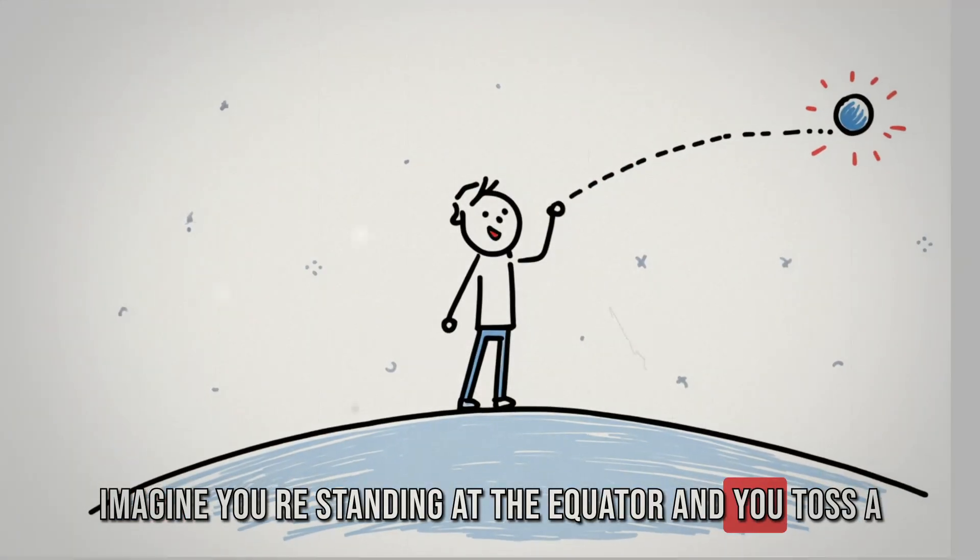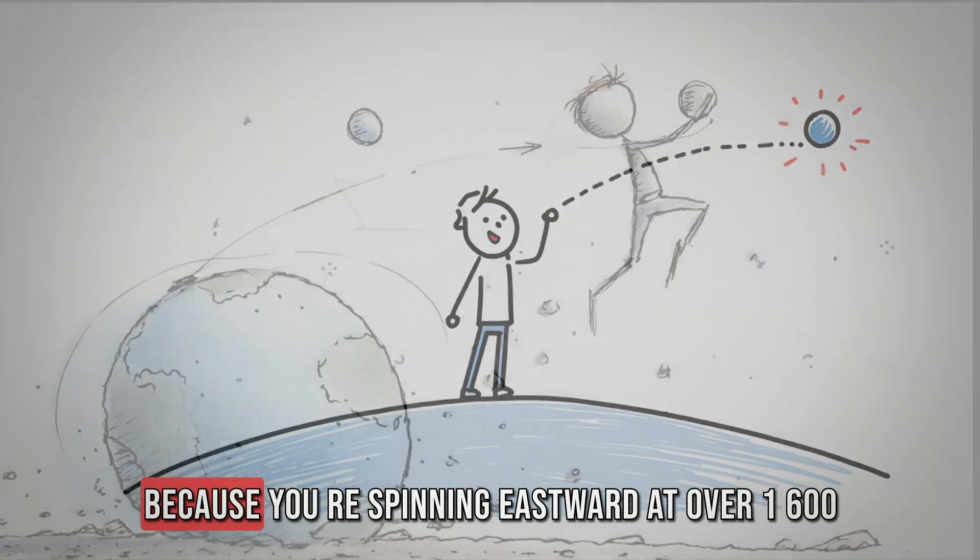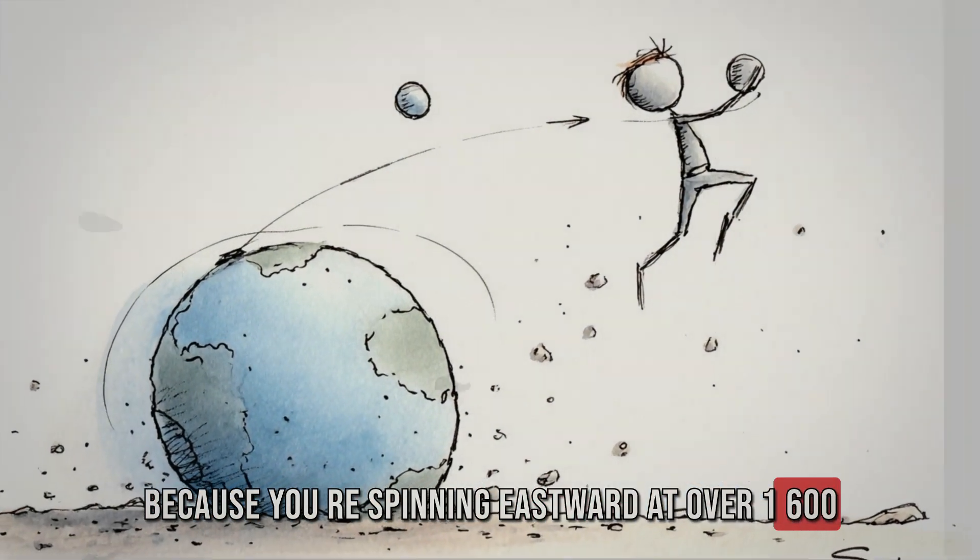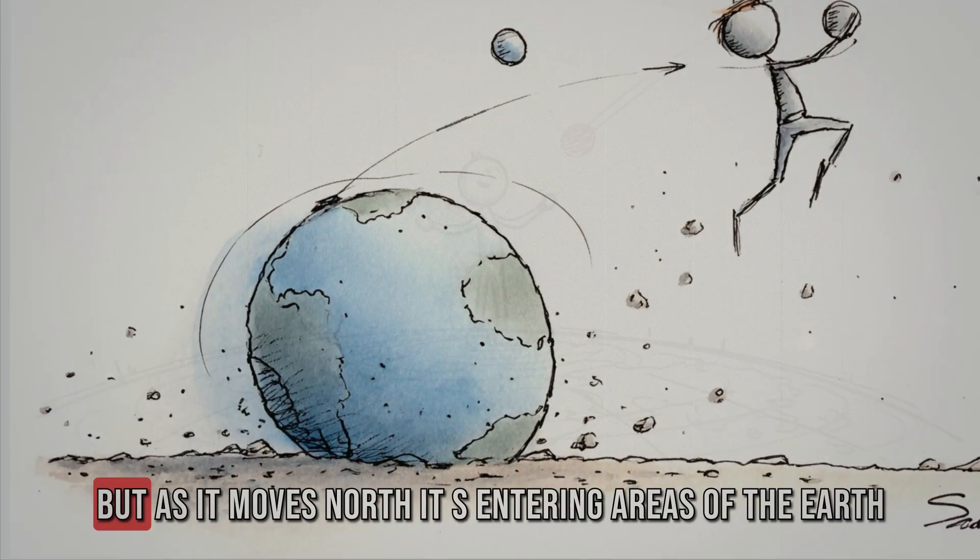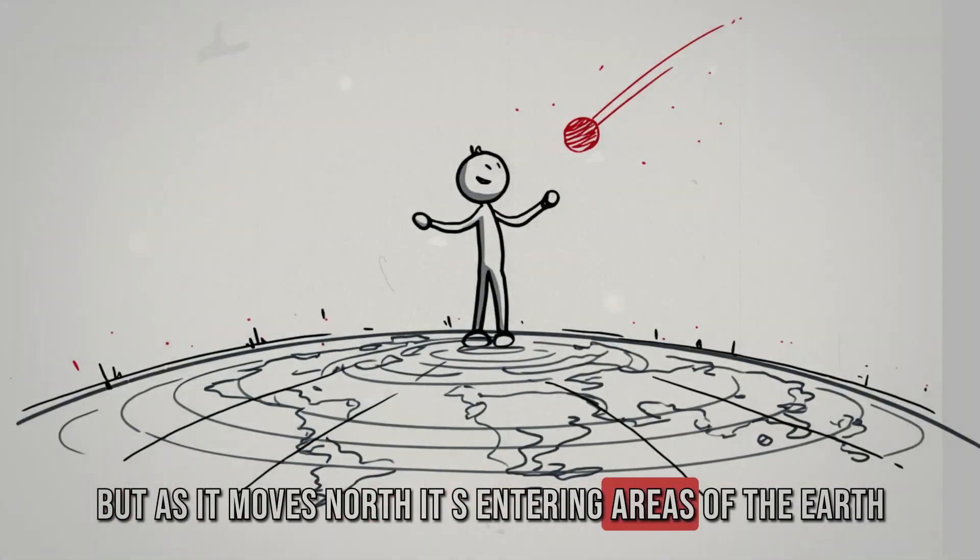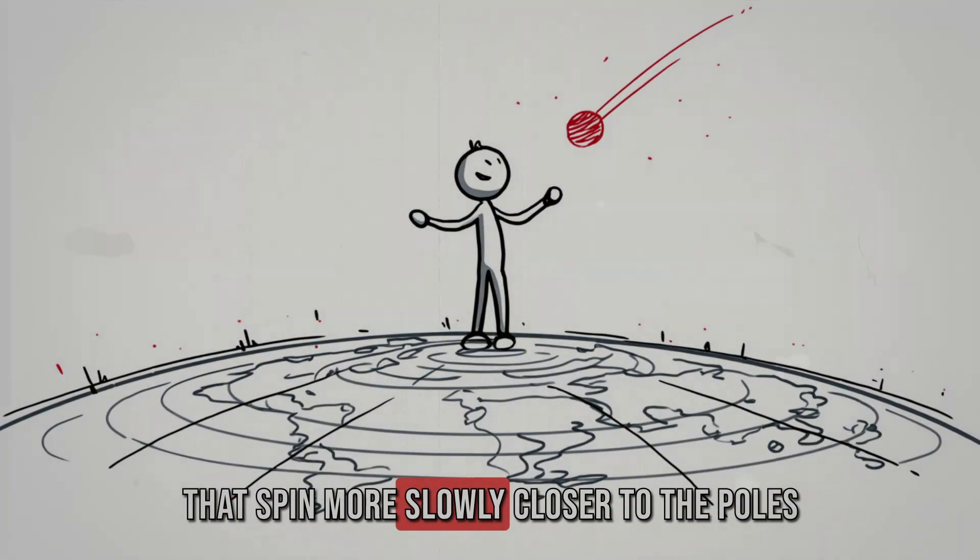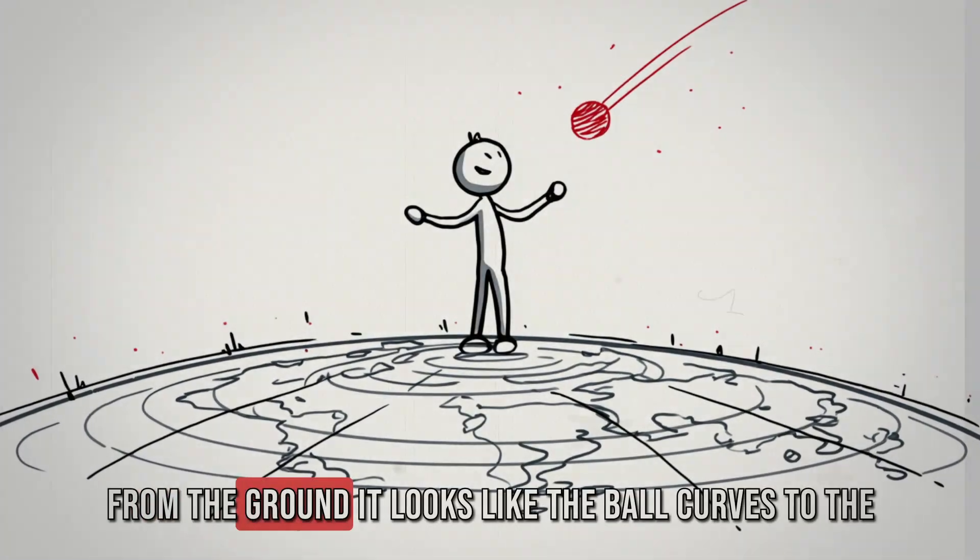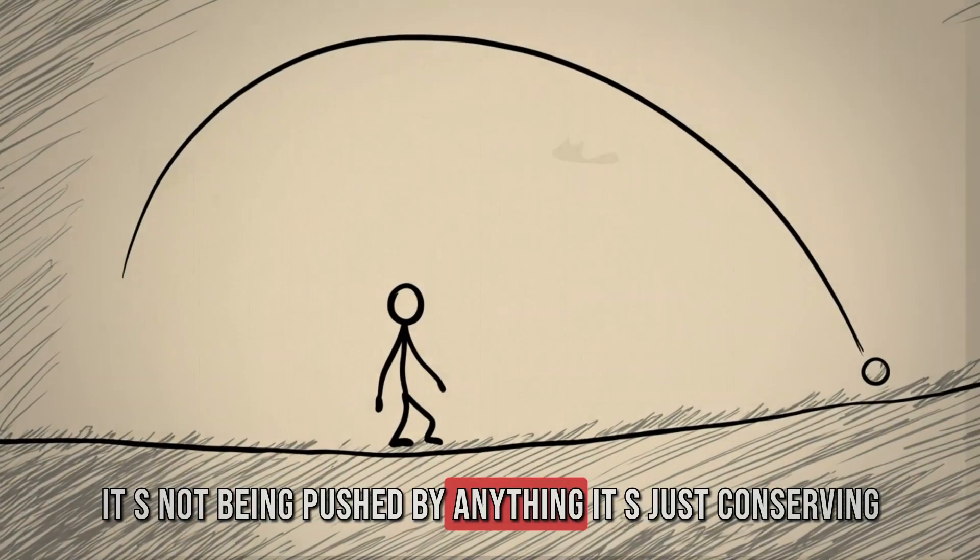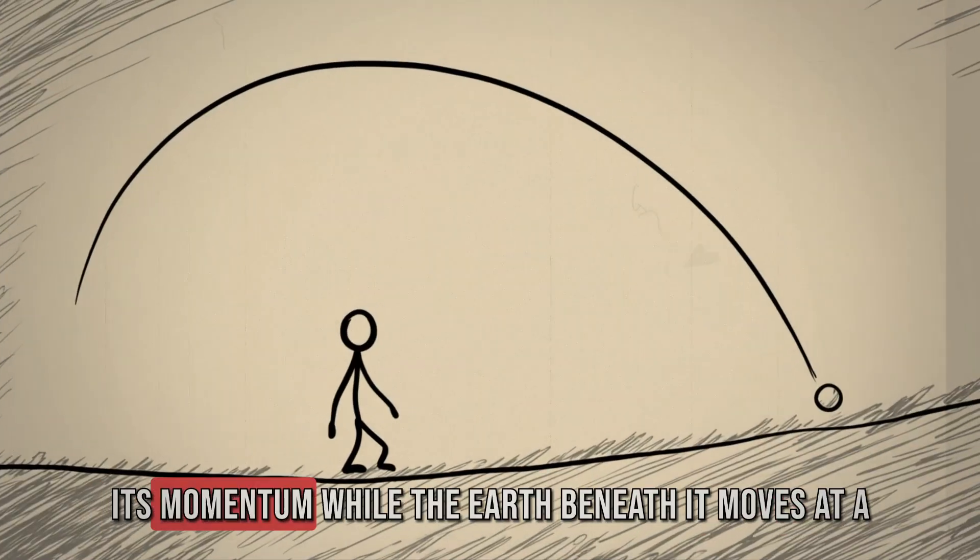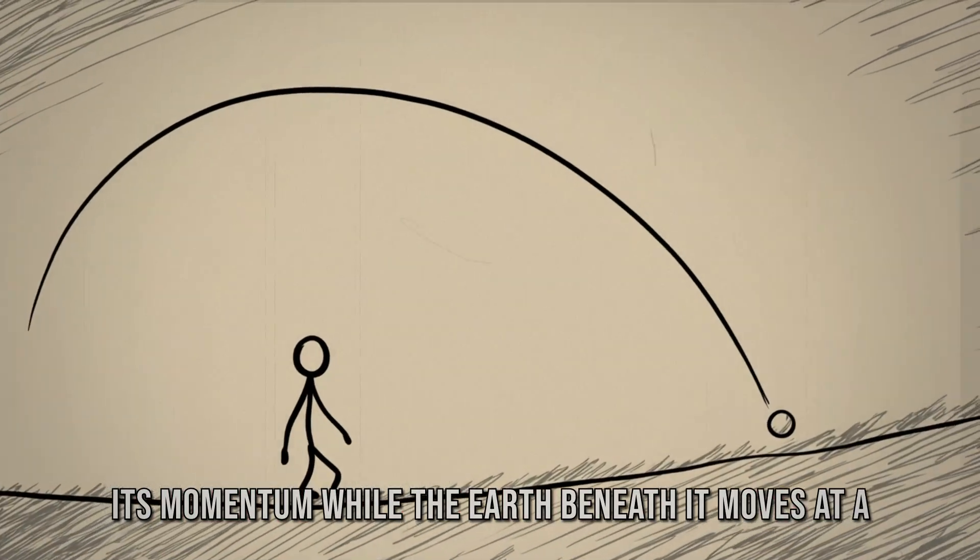Imagine you're standing at the equator and you toss a ball straight north. Because you're spinning eastward at over 1,600 kilometers per hour, the ball carries that eastward speed with it. But as it moves north, it's entering areas of the Earth that spin more slowly, closer to the poles. From the ground, it looks like the ball curves to the right. It's not being pushed by anything. It's just conserving its momentum while the Earth beneath it moves at a different speed.